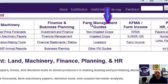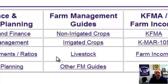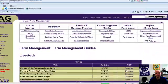The fourth column is Farm Management Guides. Here you can see there's a section for non-irrigated crops, irrigated crops, livestock, and other guides. For this demonstration, I'm going to click on the Livestock Guides.